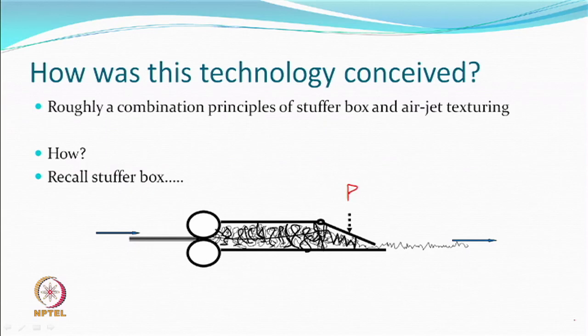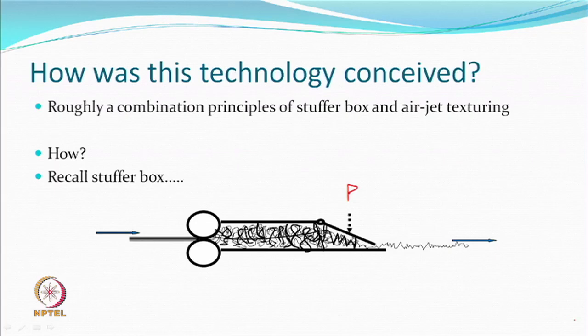This technology roughly employs principles of stuffer box and air jet texturing. The stuffer box produces yarns which are in the category of modified stretch yarns, while air jet texturing produces yarns which are bulked yarns. In a stuffer box texturing process, we are overfeeding the yarn into a box; at the exit there is a pressure plate so the yarns cannot move out, and they bend in a manner which can be controlled by the speed as well as the pressure and also the temperature of the yarn.